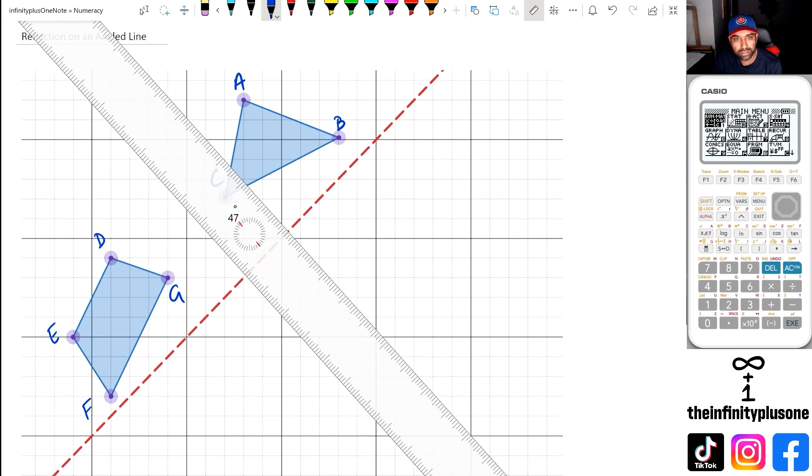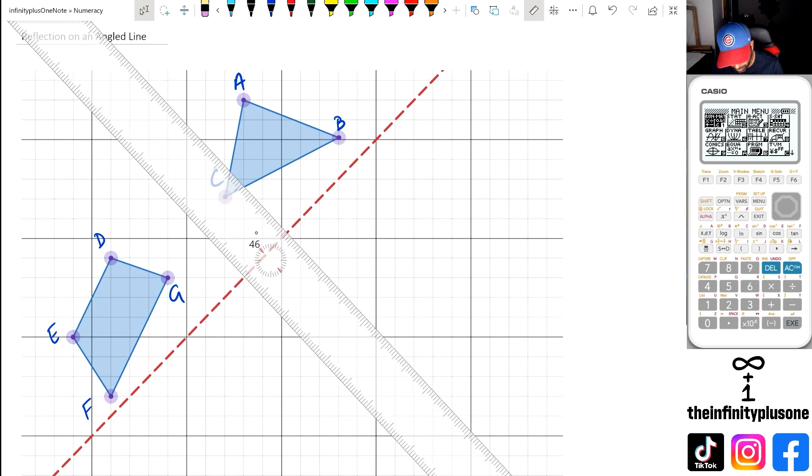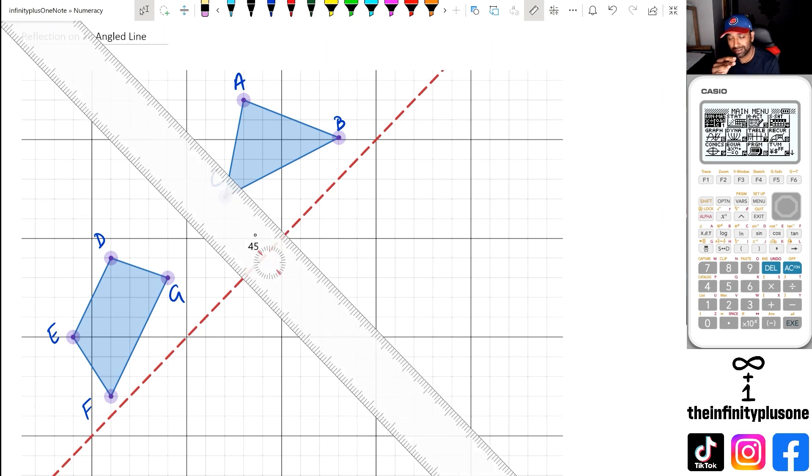So what I really would like to do in this is that I want to have this ruler so that it's perpendicular to the mirror line. Now what I mean by that is that I want this angle here to be 90 degrees.